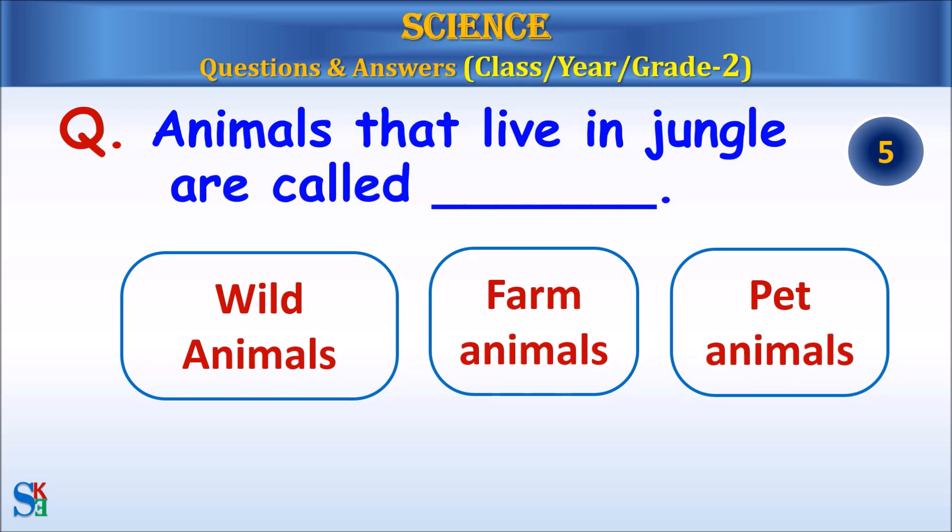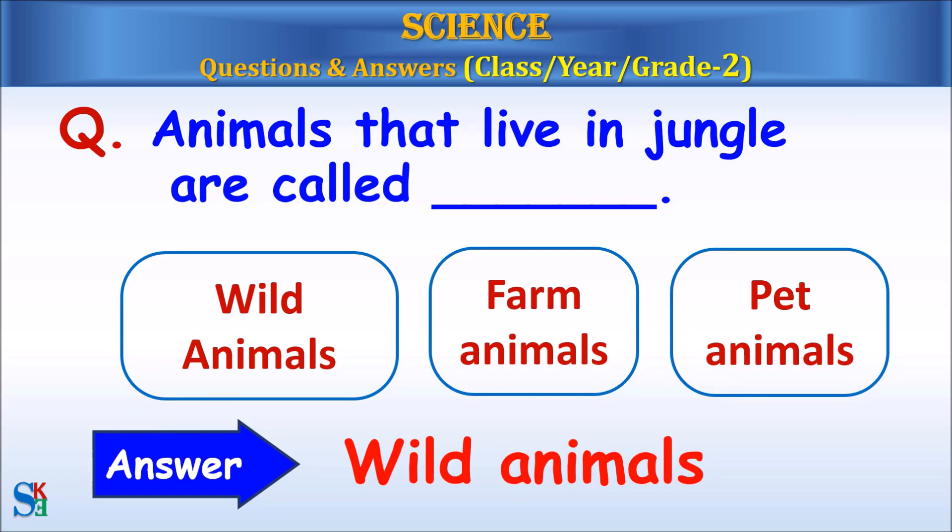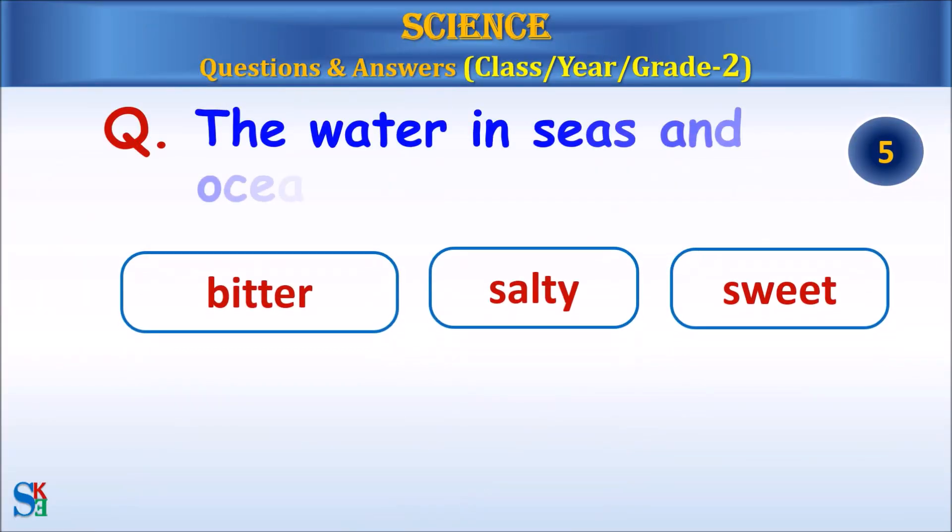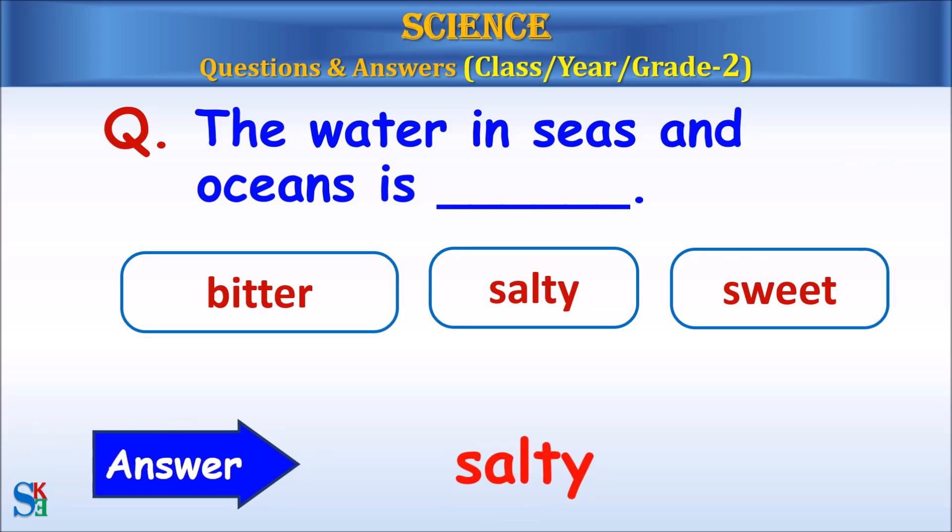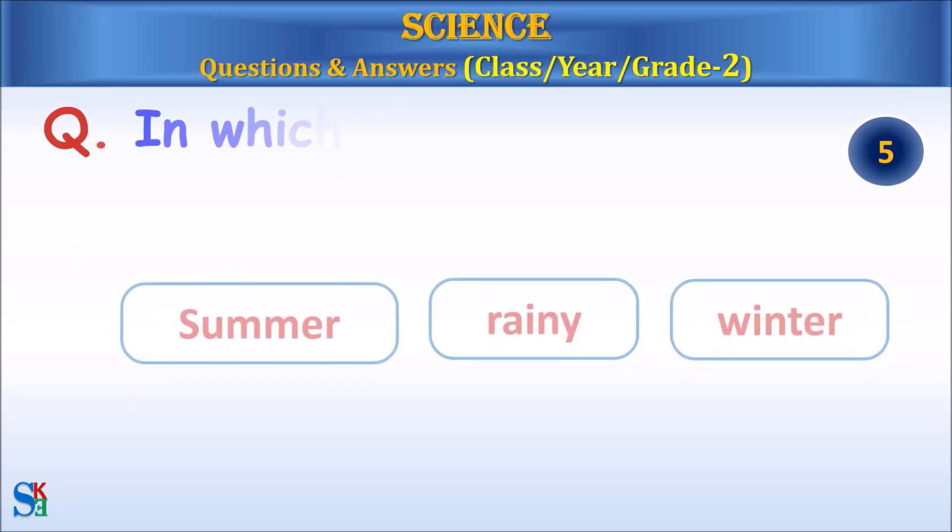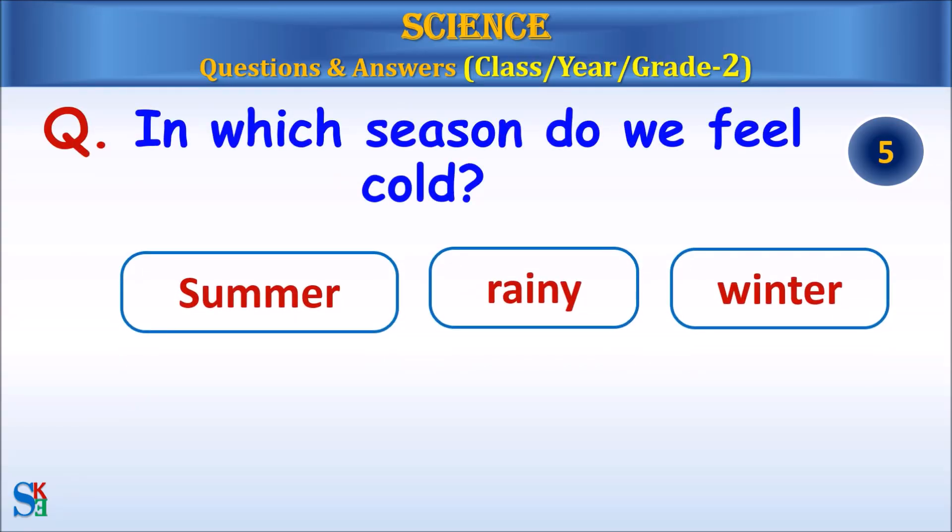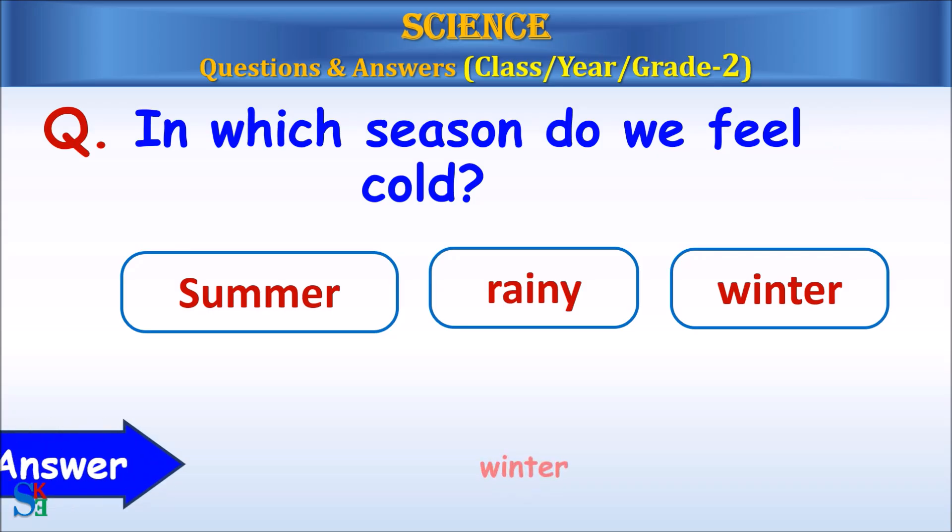Animals that live in the jungle are called wild animals, farm animals or pet animals. Answer, wild animals. The water in seas and oceans is bitter, salty or sweet? Answer, salty. In which season do we feel cold? Summer, rainy or winter? Answer, winter.